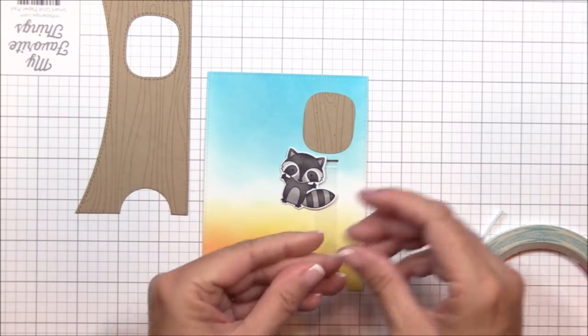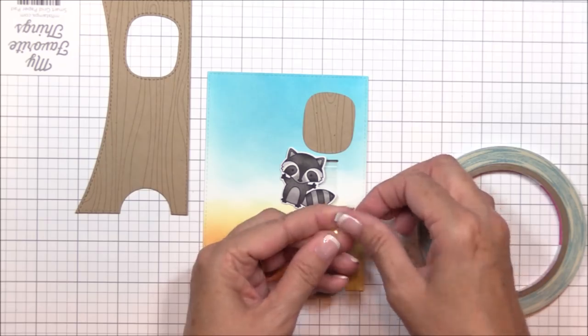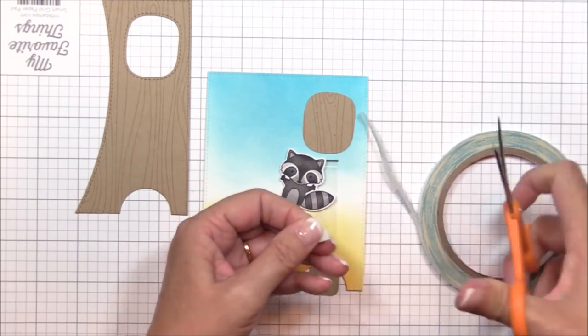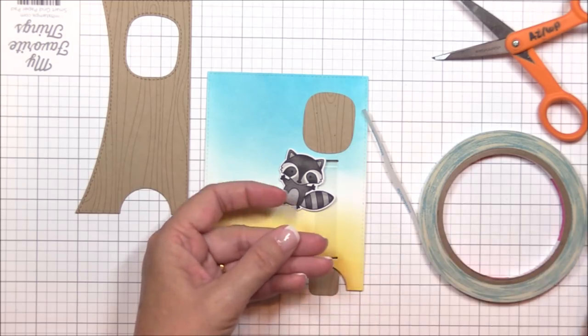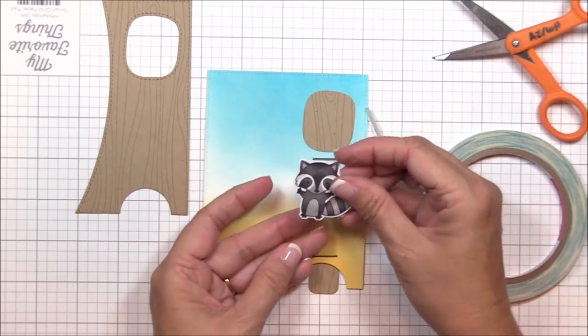I've trimmed a quarter inch by two inch strip of acetate that I'll attach to the back of the raccoon with some quarter inch score tape. I want the raccoon to pop out of the tree trunk window, and in order to do that he needs to extend beyond the loop.